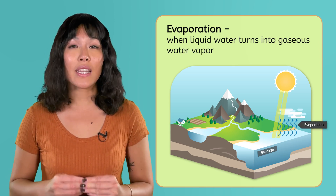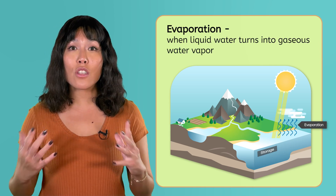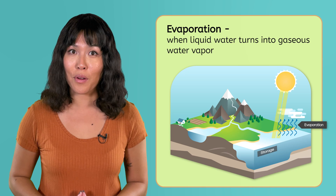Evaporation is when liquid water turns into gaseous water vapor. This mostly happens when water in storage is warmed by the sun's heat. Then it evaporates into water vapor and rises into the atmosphere, where it starts to condense.